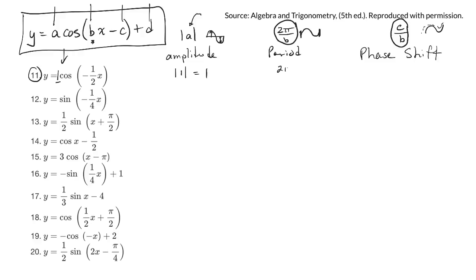The period I get from taking 2π and dividing it by whatever B is. Here's B right there. So it's 2π divided by negative 1/2. Now that's a little tricky to do. What I typically do is I go 2π divided by 1/2 or 2π times 2 over 1.